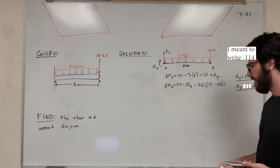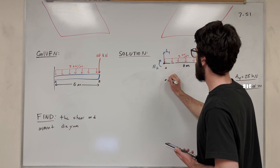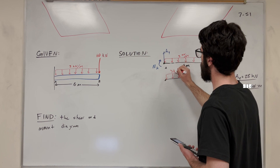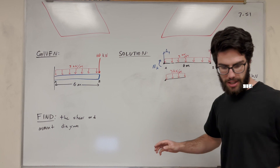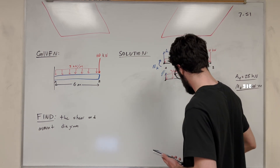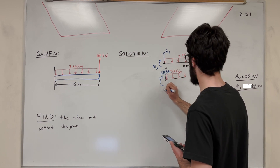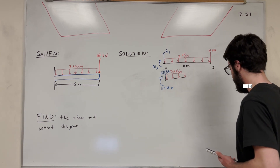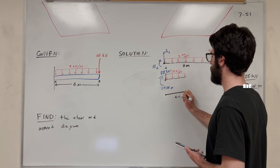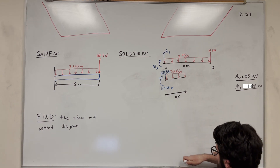We found these two support reactions. Now we need to take a cut and figure out what happens as we go along. Let's pretend we take a cut right there. We're going to have the distributed load still at 3 kilonewtons per meter. We have support reaction A_Y labeled as 28 kilonewtons, and the moment at A as 114 kilonewton meters. We don't know the distance of our cut yet — we'll label that delta x, which is how far we've traveled.